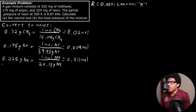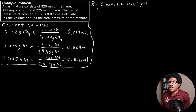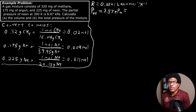Now we have the number of moles for each substance. The last conversion needed is to make the pressure compatible with our gas constant: convert the partial pressure of neon from kilopascals to atm. The partial pressure of neon is 8.87 kilopascals, which converts to 0.0875 atm.